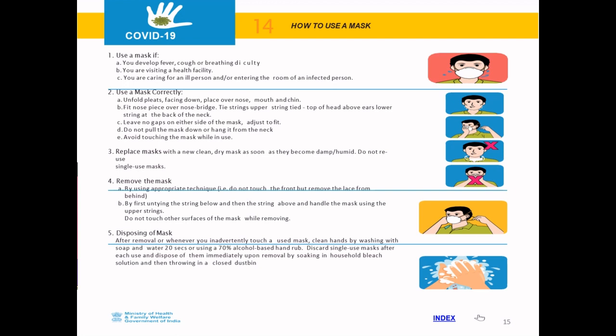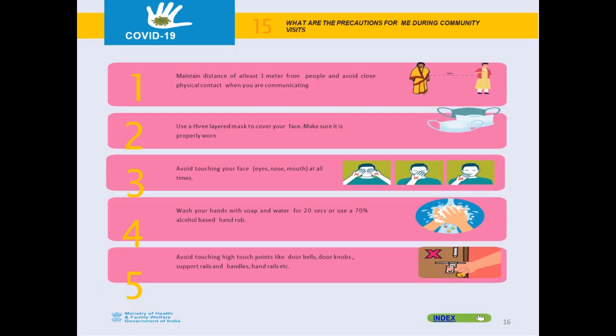When you are in a community, maintain a distance of at least 1 meter from people and avoid close physical contact when communicating. Use a 3-layered mask to cover your face and make sure it is worn properly. Using a mask alone does not protect you 100% — you need to also follow social distancing, respiratory hygiene, and hand hygiene. Avoid touching your face — eyes, nose, and mouth — at all times. Wash hands with soap and water for 20 seconds or use a 70% alcohol-based hand rub. Avoid touching high-touch points like doorbells, door knobs, and support rails and handles. Remember these five key points.